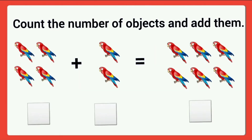Next, how many birds are in the first group? One, two, three, four. Write four. Then how many birds are in the second group? One, two. Then total number of birds are one, two, three, four, five, six. That is four plus two is equal to six.